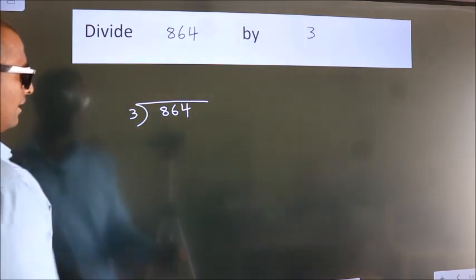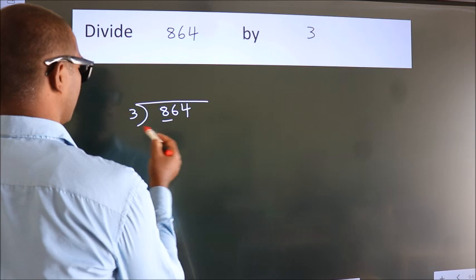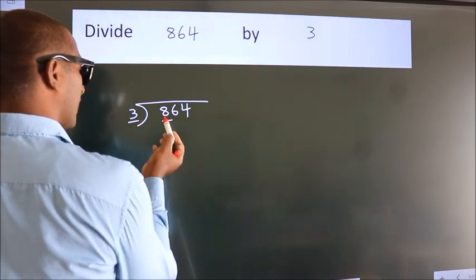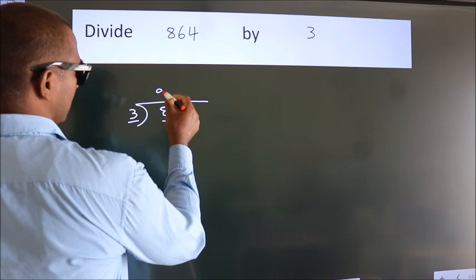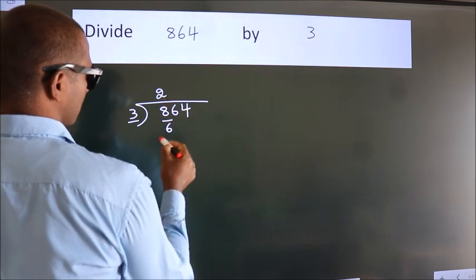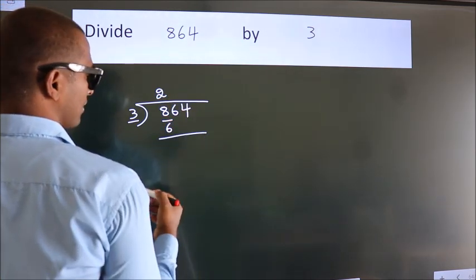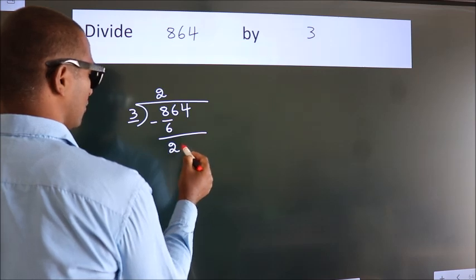Next, here we have 8, here 3. A number close to 8 in 3 table is 3 2s, 6. Now we should subtract. We get 2.